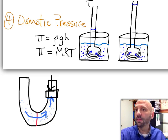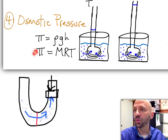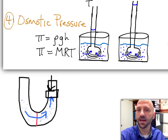And so that brings us to this equation up here, pi equals MRT, molarity, the gas constant, and the temperature.